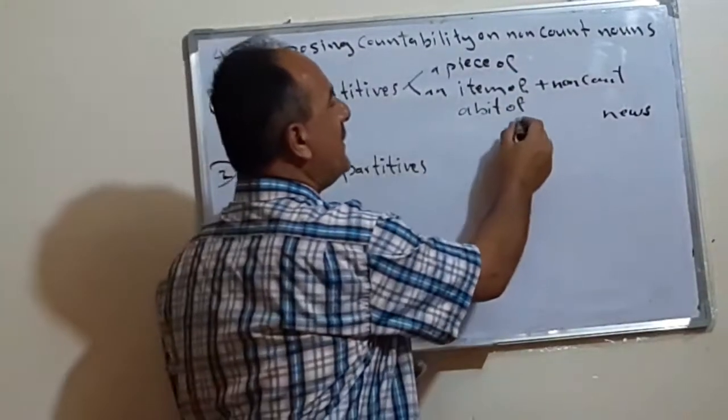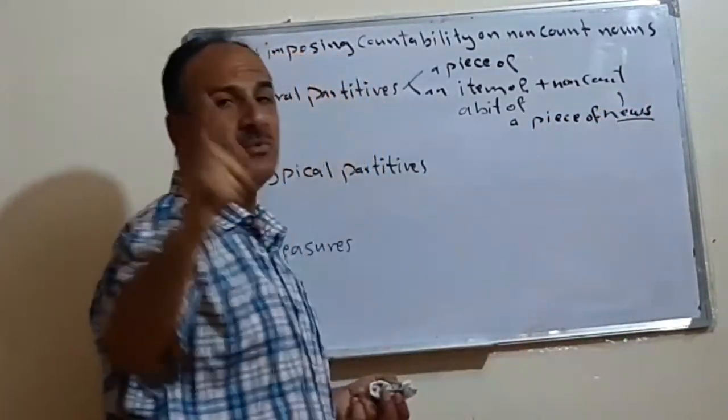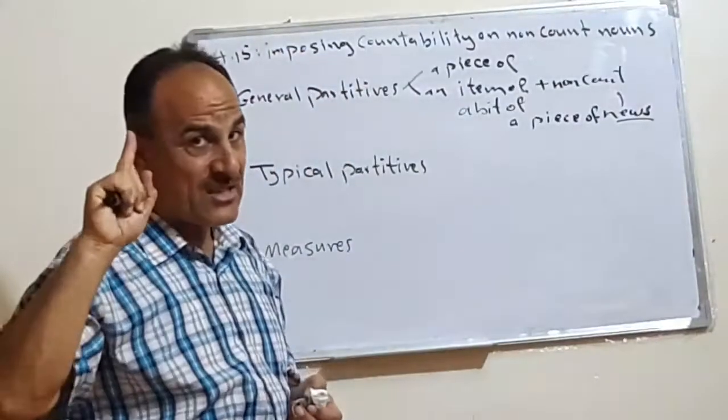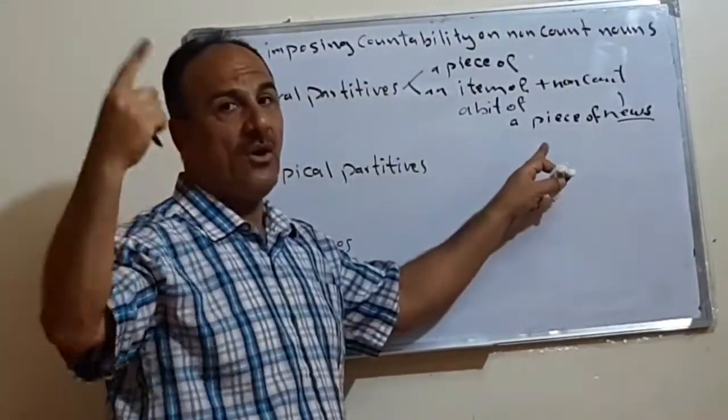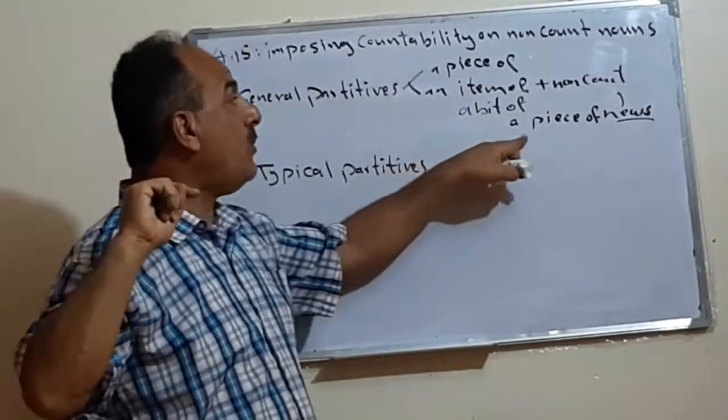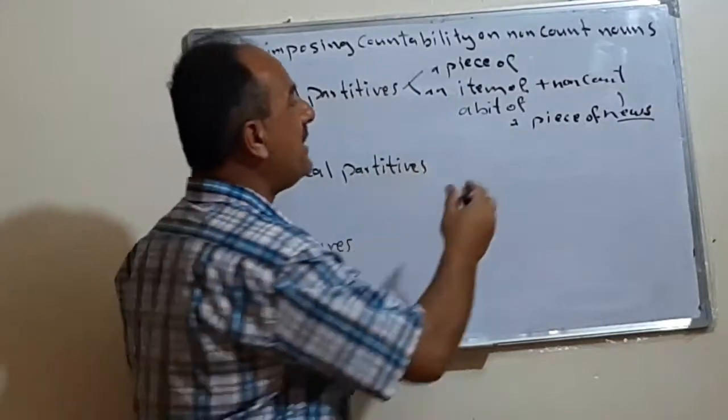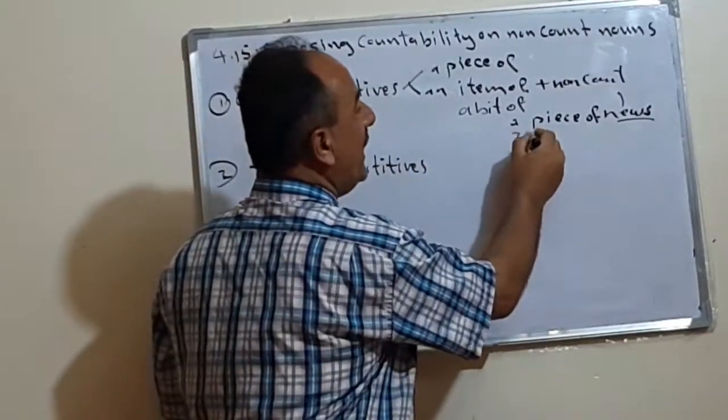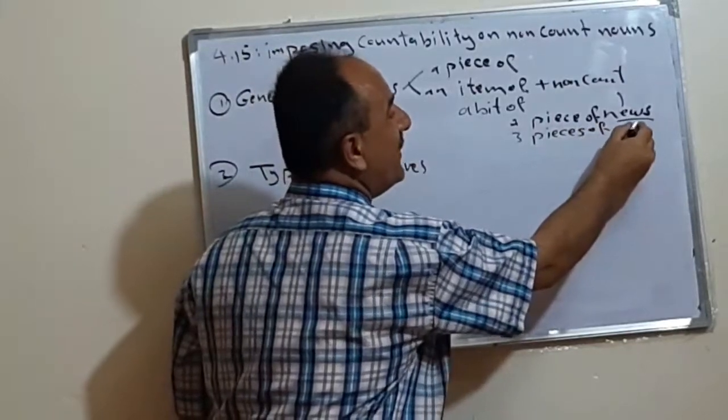For example, if we say a piece of news, means we have just one. We have just, we hear just one piece of news, or we told just one. So if we want to make plural of this, we say, instead of a piece, we say, for example, three pieces of what? Of news.